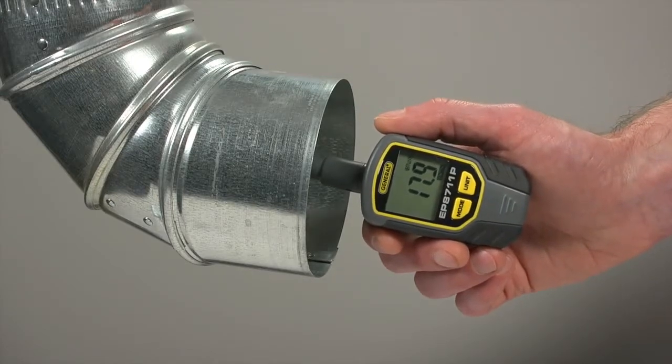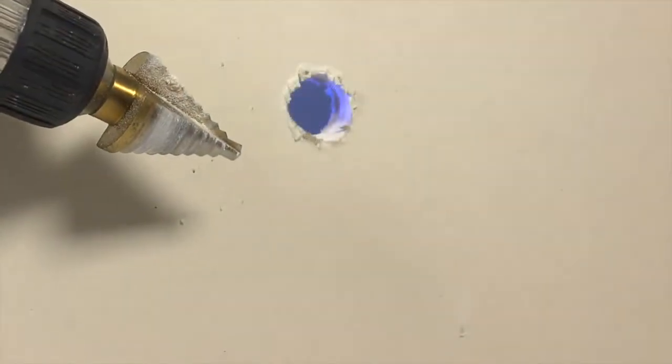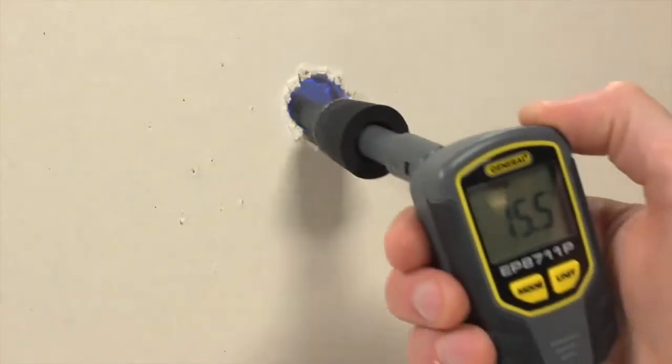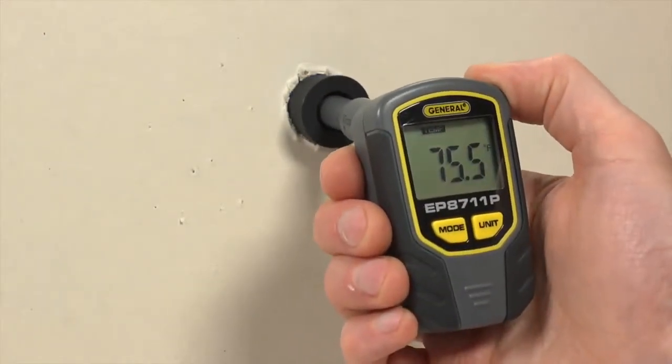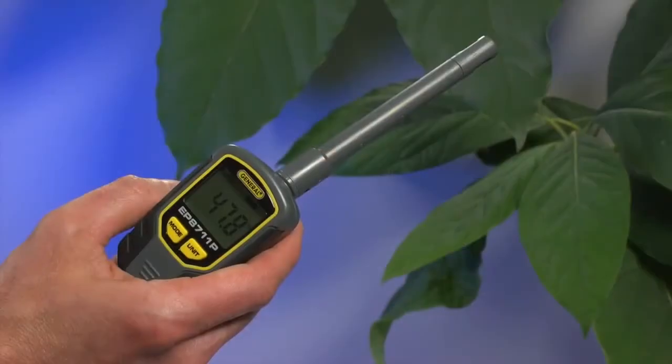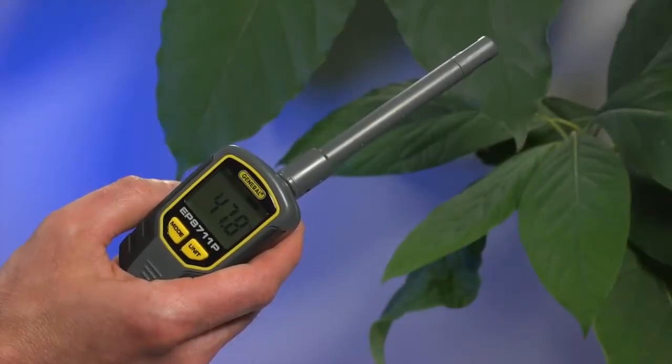6-inch probe lets you get into ductwork. Need to measure conditions where there's no entry point? Drill a temporary hole and insert the probe. Use the rubber bushing to seal the opening as you measure. You can also take measurements in an ambient indoor environment.